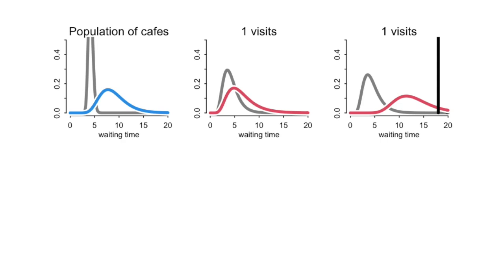What I want you to notice is that the estimate for cafe alpha has also changed, and that has to be true if our golem is going to learn optimally. The optimal golem will remember that it visited cafe alpha, and the new information from cafe beta forces it to revise its estimate for cafe alpha even though it's not in cafe alpha anymore. The estimate for cafe alpha depends upon the estimate for the whole population, and when the golem visited cafe beta it updated its estimate of the population of cafes.